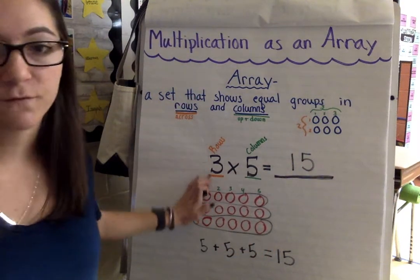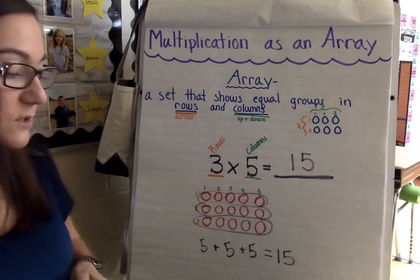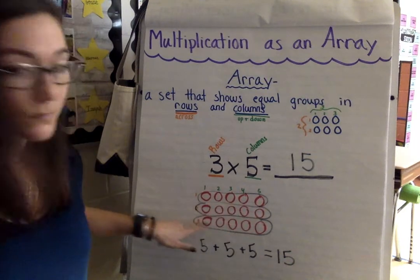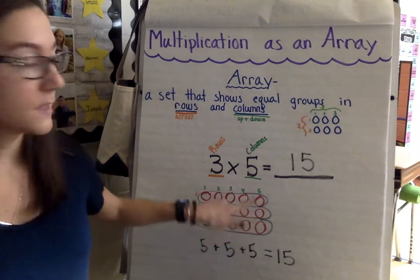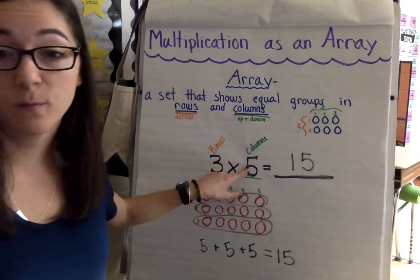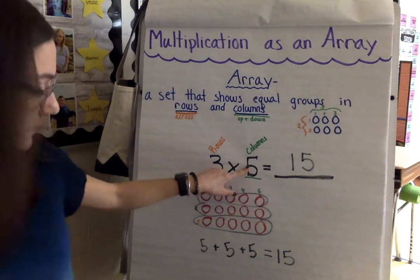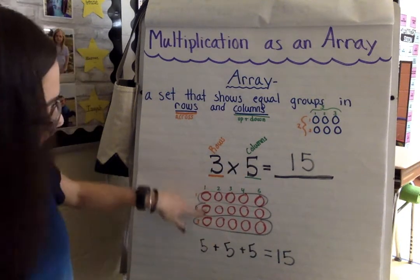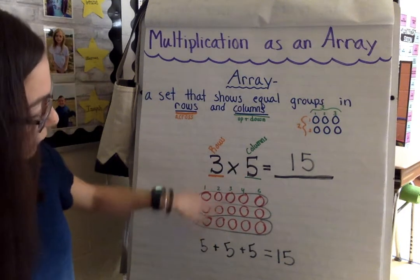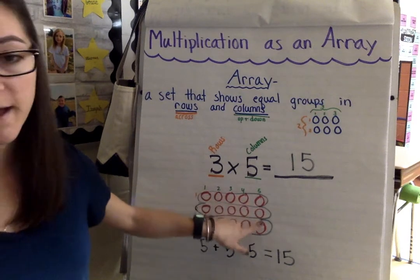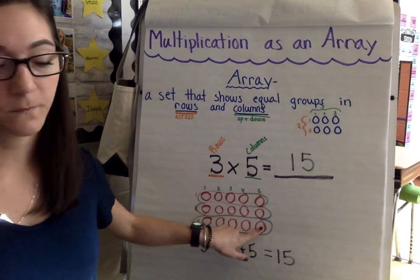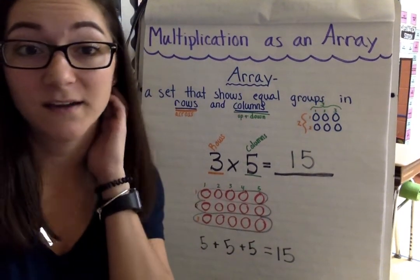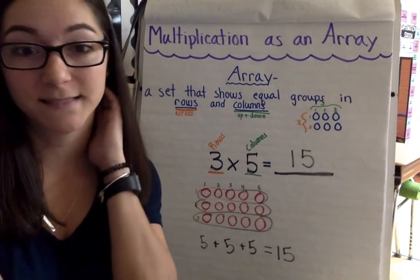So again, the first factor tells you how many rows to make — one, two, three. The second factor tells you how many columns to make, or how many to put in each row — one, two, three, four, five. Go ahead and solve the problems on the next slide using arrays.